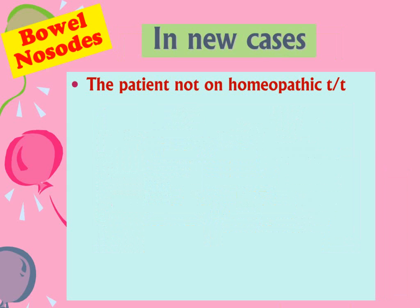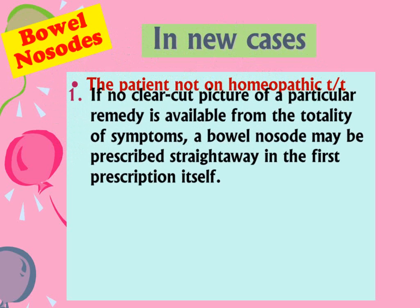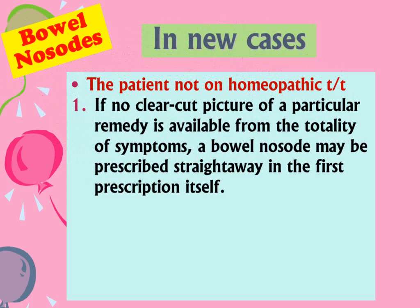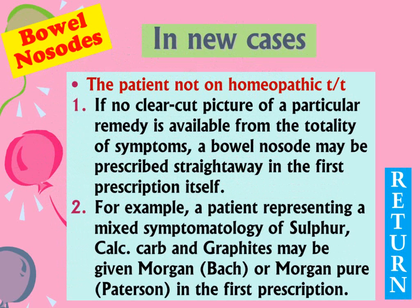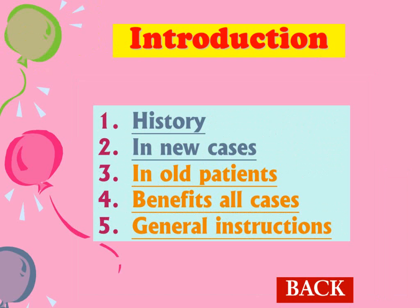In new cases — where a patient has not received any homeopathic treatment and comes for the first time — if no clear-cut picture of a particular remedy is available from the totality of symptoms, you may select a bowel nosode straightaway in the first prescription itself. For example, if a patient presents mixed symptomatology of Sulphur, Calcarea, and Graphitis, give Morgan Bach or Morgan Pure Patterson in the first prescription.